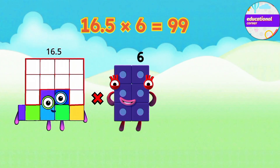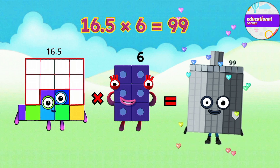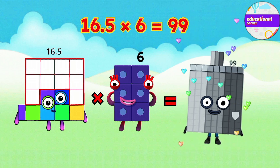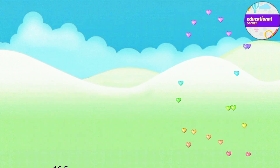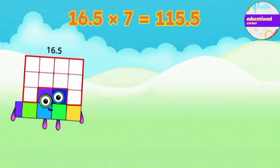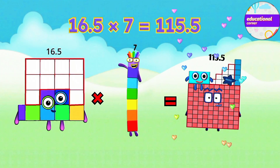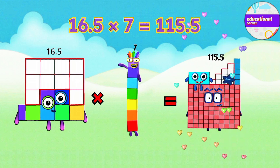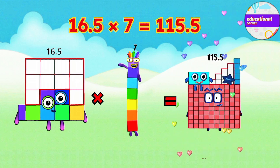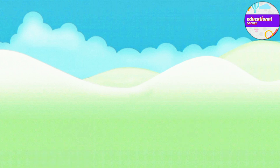16.5 multiplied by 6 equals 99. 16.5 multiplied by 7 equals 115.5.